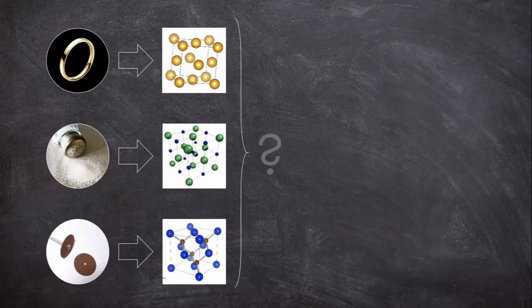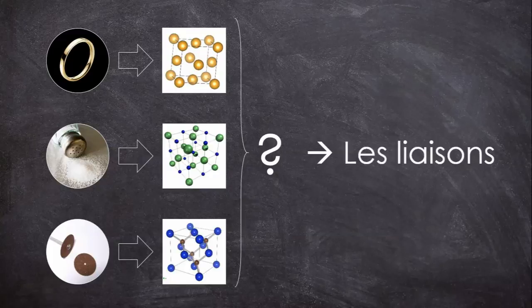Du coup, qu'est-ce qui explique leurs propriétés si différentes? Eh bien, ce sont les liaisons entre les atomes. La règle du duet et de l'octet, ça vous dit quelque chose? Pour rappel, la majorité des atomes ne sont pas stables au naturel, parce que leur couche électronique externe est incomplète. Du coup, ils échangent des électrons avec d'autres atomes, ce qui donne des molécules comme H2O ou CO2, mais aussi les matériaux qu'on étudie ici. Et en fait, ce qui va différencier ces liaisons, c'est la façon dont les électrons sont échangés.